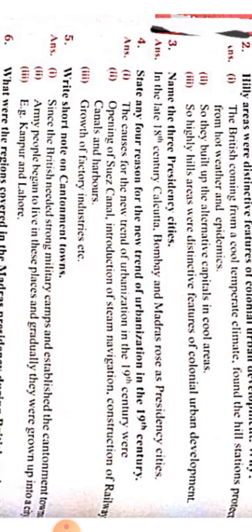State any four reasons for the new trend of urbanization in the 19th century. Urbanization means — if you have a village and you want to urbanize it, you cut the trees, build companies, factories, and apartments. That is urbanization. The causes for the new trend of urbanization in the 19th century were: the opening of schools, canals, introduction of steam navigation, and construction of railways.